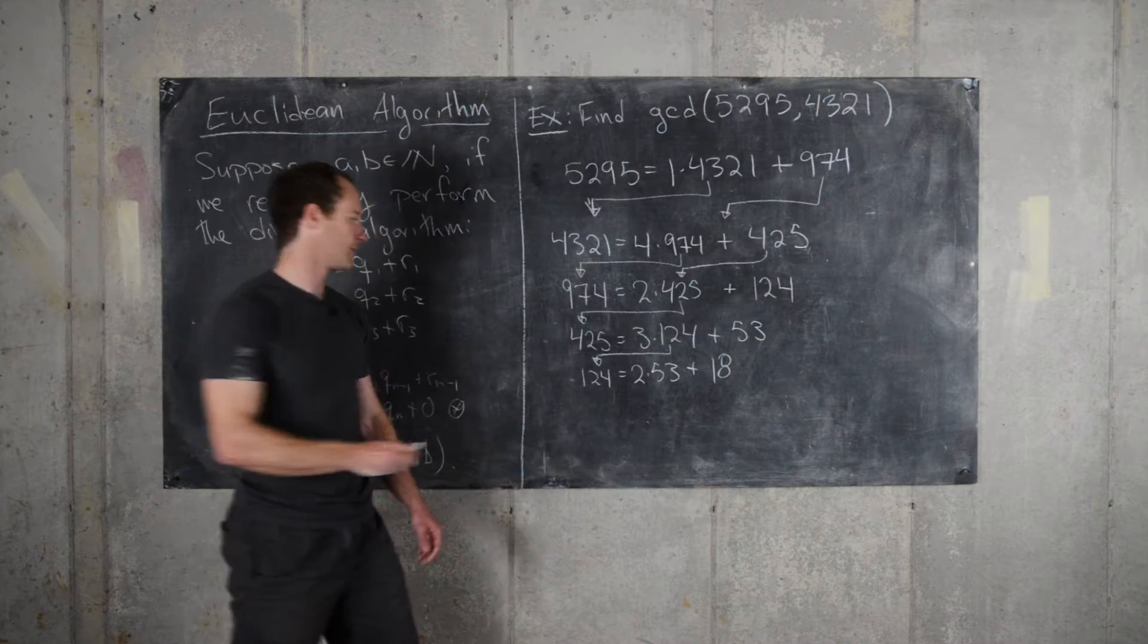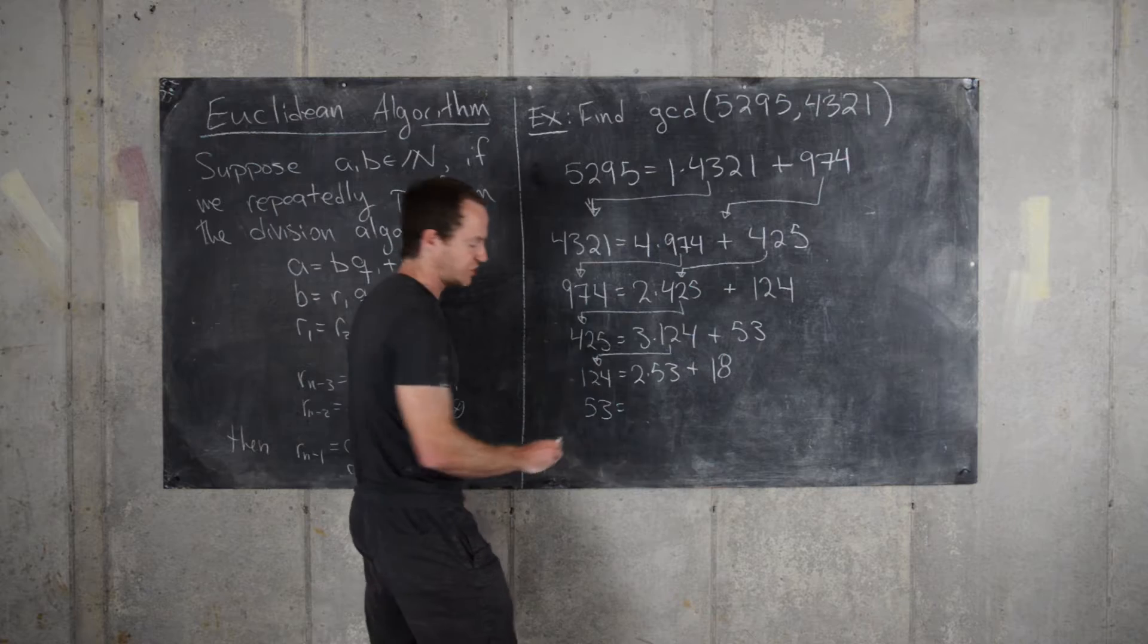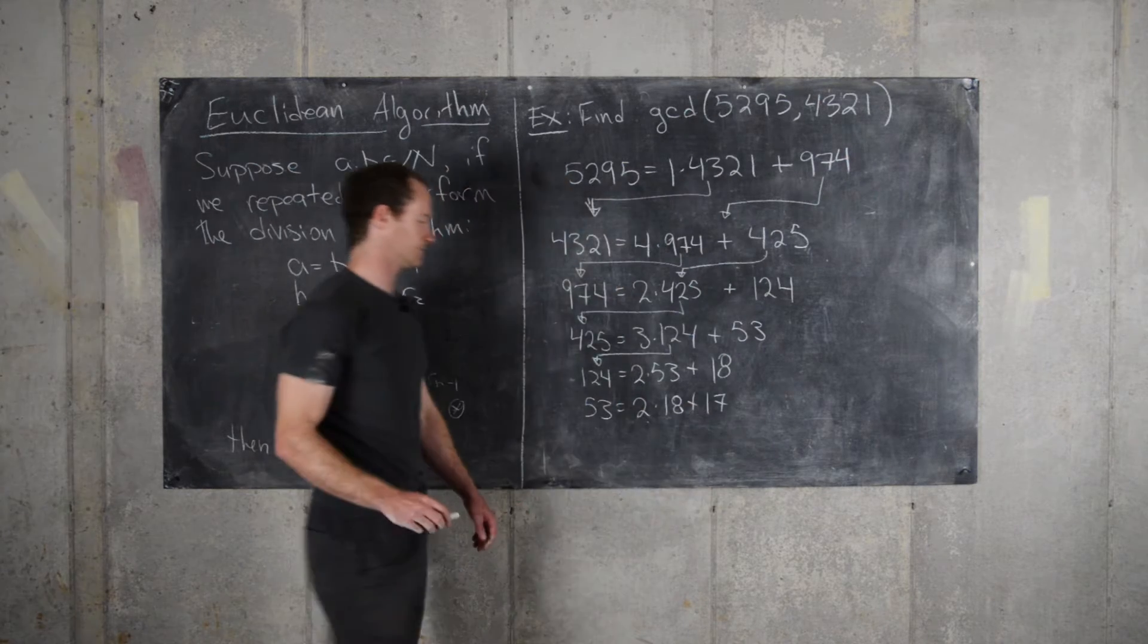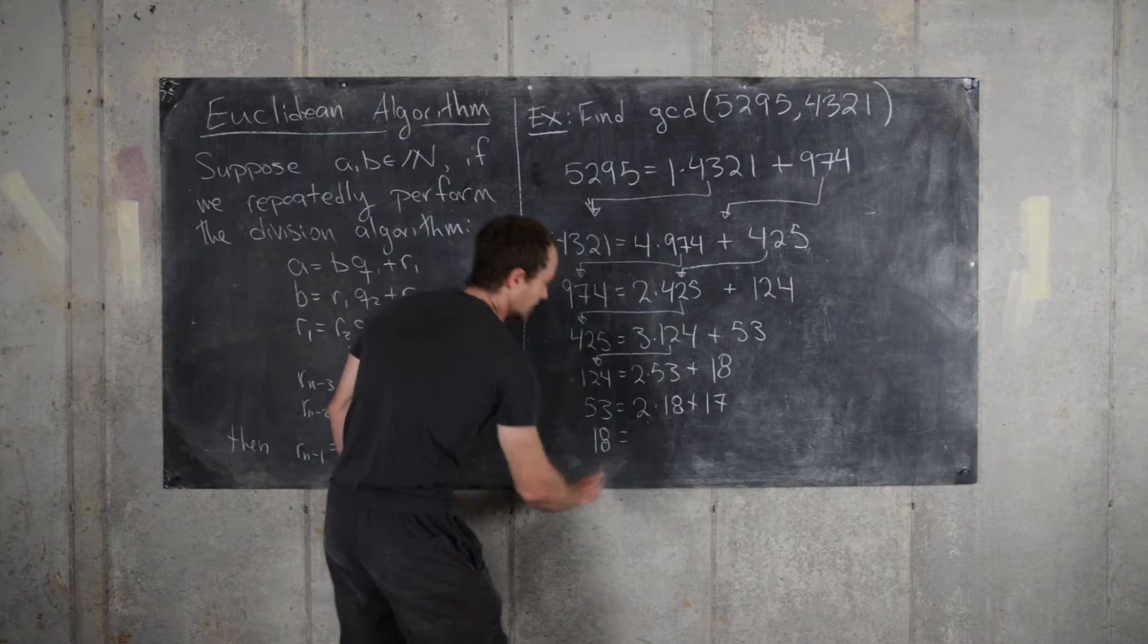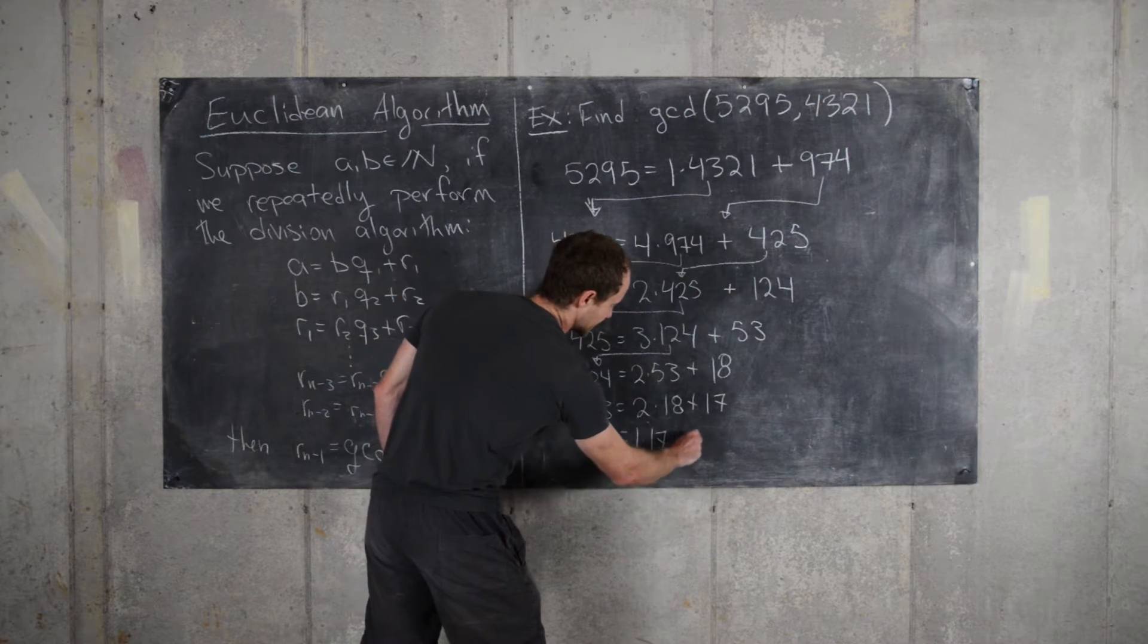And then 53 is equal to 2 times 18 plus 17. And then 18 is equal to 1 times 17 plus 1.